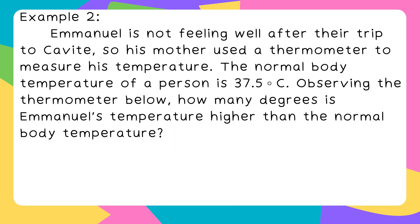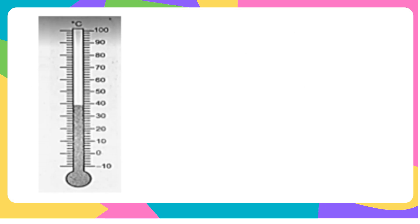Tingnan natin ang example number 2. Emmanuel is not feeling well after their trip to Cavite, so his mother used the thermometer to measure his temperature. The normal body temperature of a person is 37.5 degrees Celsius. Observing the thermometer below, how many degrees is Emmanuel's temperature higher than the normal body temperature? Hindi maganda ang pakiramdam ni Emmanuel, meaning meron siyang sakit. Tingnan natin ang kanyang temperature. Based on our thermometer, umabot ito na wala pa namang 40. Sa last line natin, meaning ito ay 38 degrees Celsius. As we all know, ang normal body temperature natin is 37.5 degrees Celsius. Ilan kaya ang difference ng normal body temperature sa temperature ni Emmanuel?